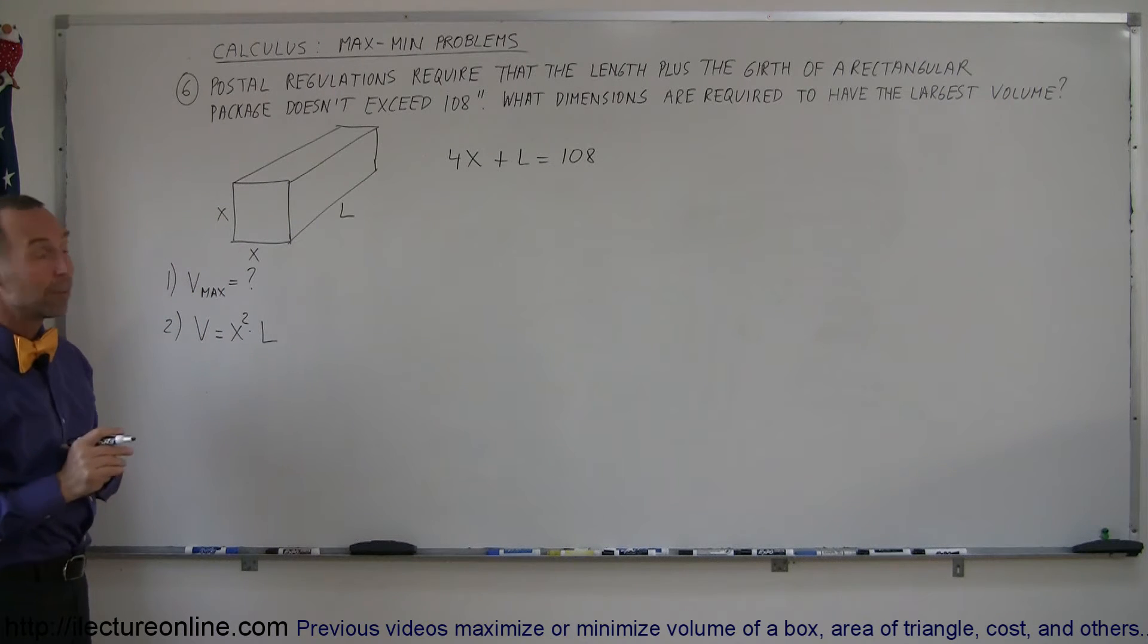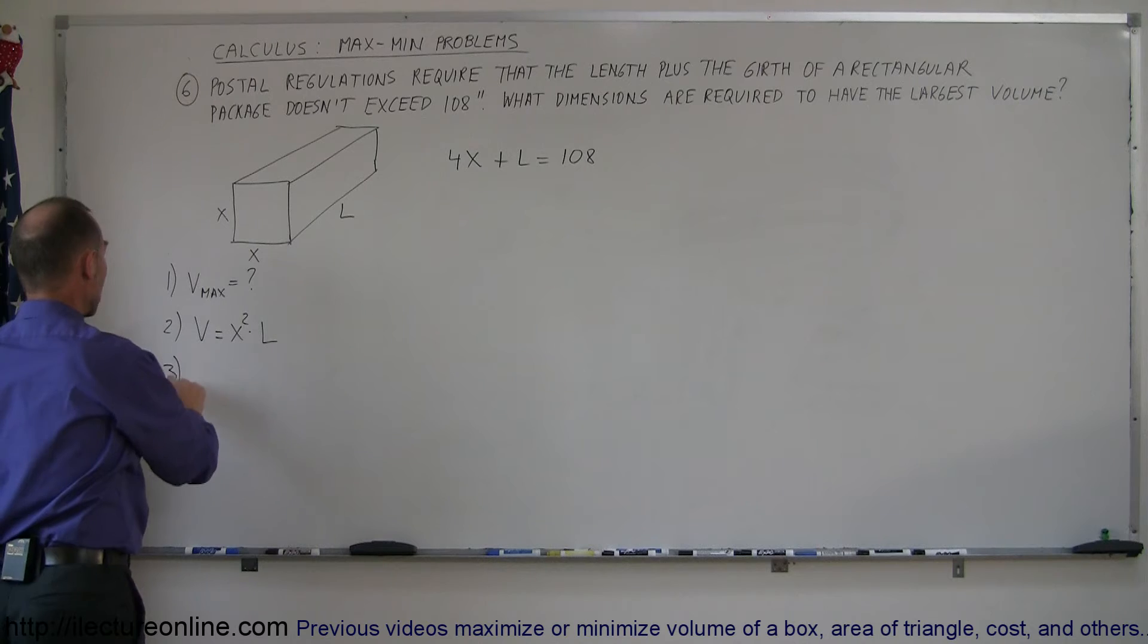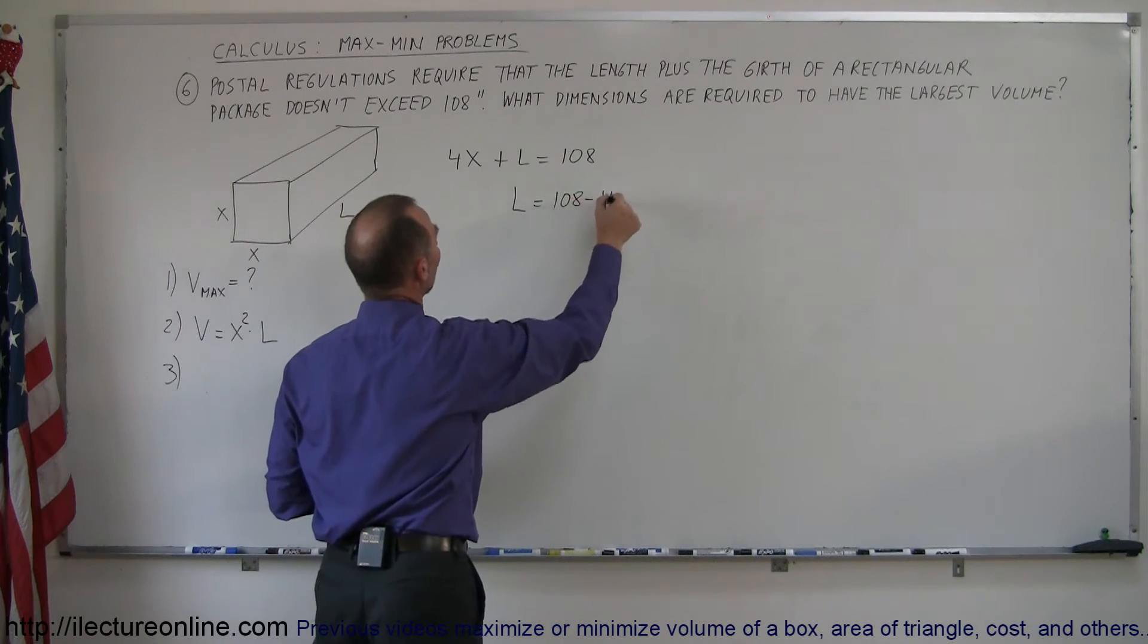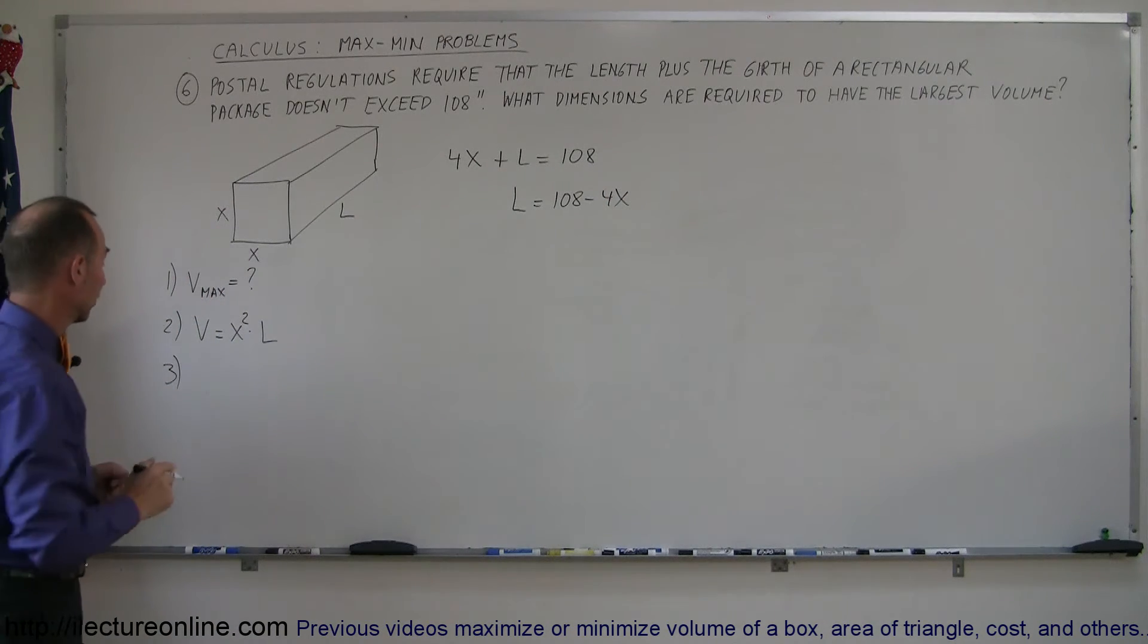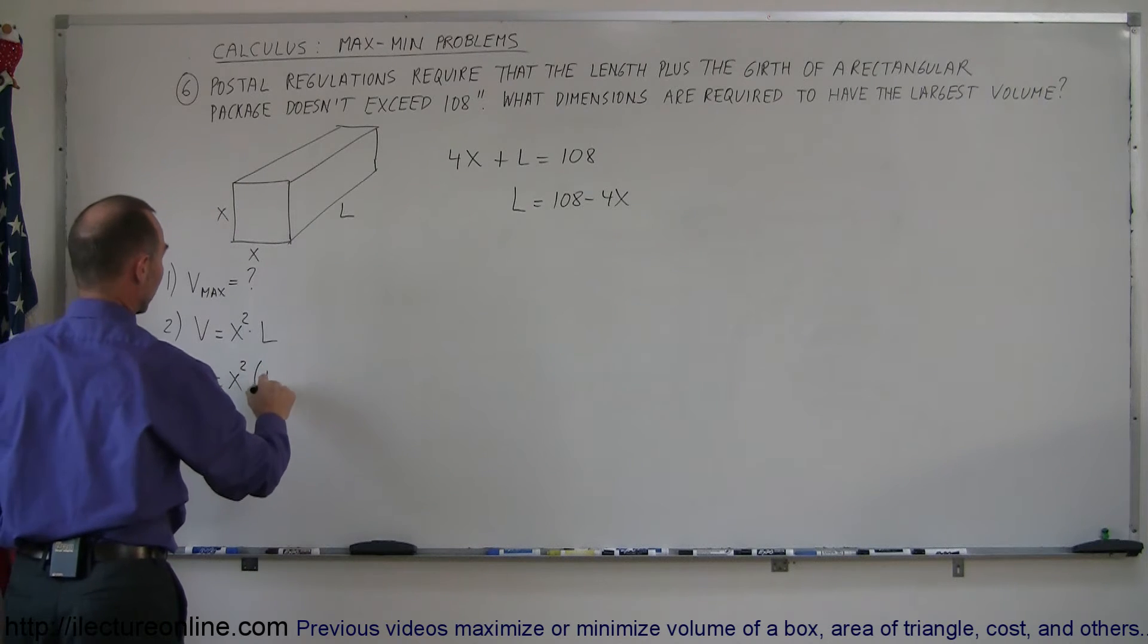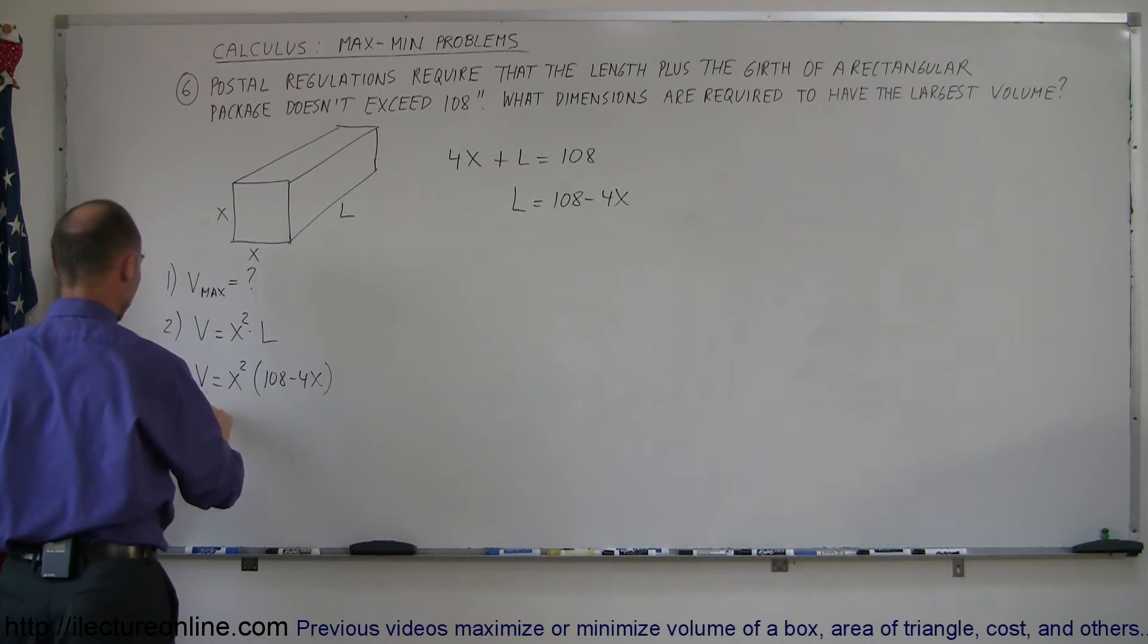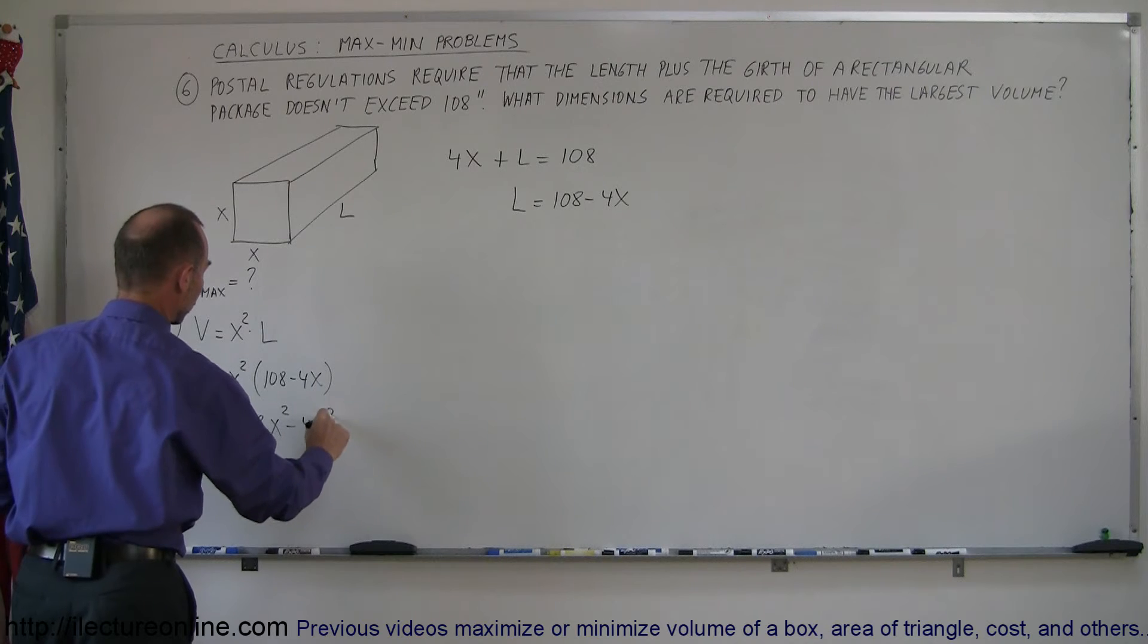So from that you can see that we can solve for L and plug that into our equation. Step three, use the constraint L equals 108 minus 4x and plug it into your equation to get rid of one of the variables and so we end up with volume is equal to x squared times 108 minus 4x. And if we simplify this a little bit the volume is equal to 108x squared minus 4x cubed.